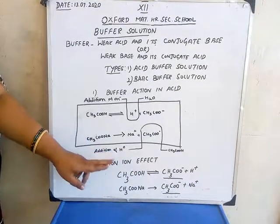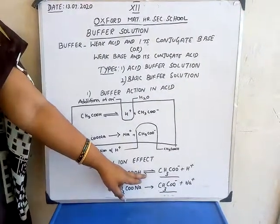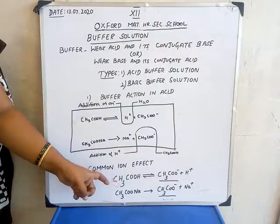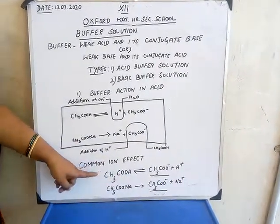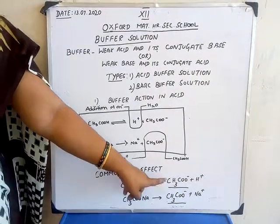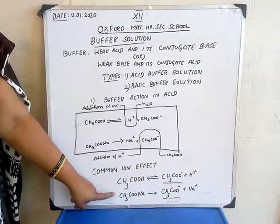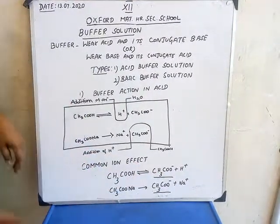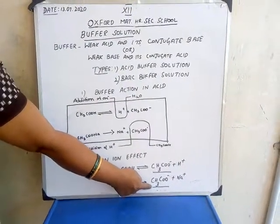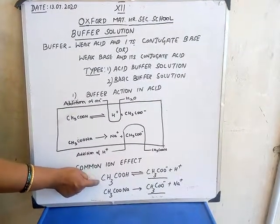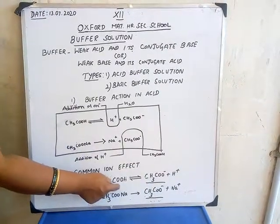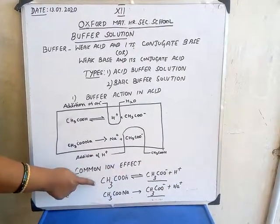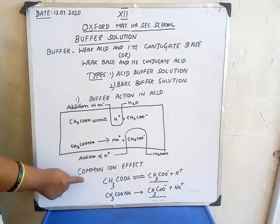The next most important topic is common ion effect. Common ion effect means the dissociation of a weak acid or base is suppressed by the addition of its own ion. For example, acetic acid on dissociation produces acetate and H⁺. After that, when we add sodium acetate, it dissociates to acetate and sodium ion. Here acetate ion is present in both cases. So due to this addition of sodium acetate, the dissociation of the weak acid is suppressed — it doesn't dissociate further. That effect is called common ion effect.